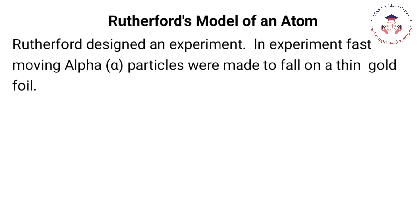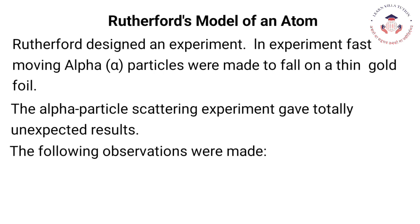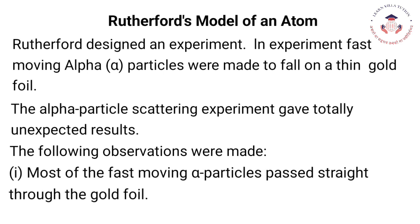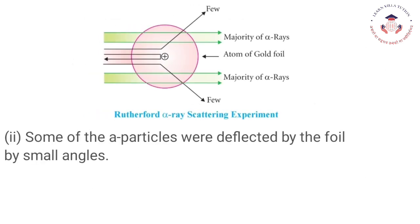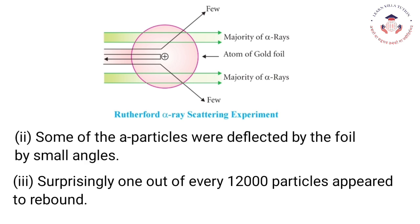Rutherford's model of an atom: Rutherford designed an experiment in which fast-moving alpha particles were made to fall on a thin gold foil. The alpha particle scattering experiment gave totally unexpected results. The following observations were made: most of the fast-moving alpha particles passed straight through the gold foil; some of the alpha particles were deflected by the foil by small angles; and surprisingly, one out of every 12,000 particles appeared to rebound.